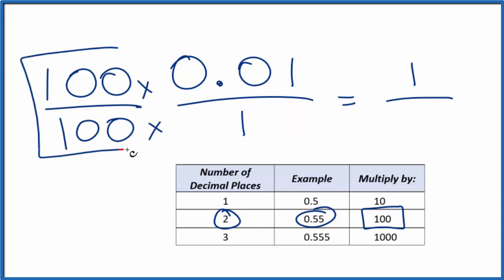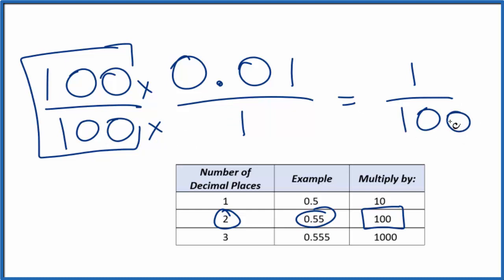100 over 100 is the same thing as 1, so we're just multiplying by 1 — we're not changing anything. 100 times 0.01 gives us 1, and 100 times 1 gives us 100. And now we have our fraction: 1 over 100 is equal to 0.01.